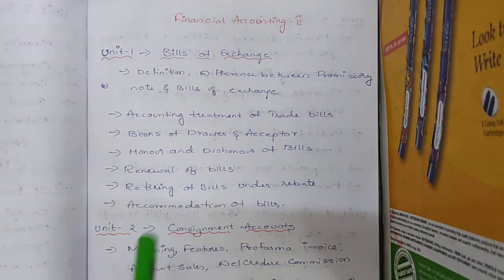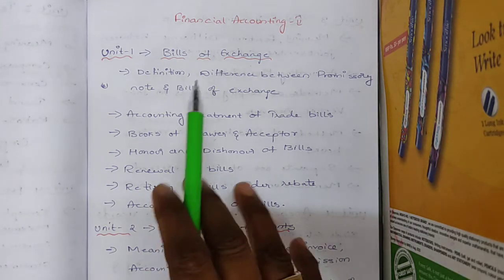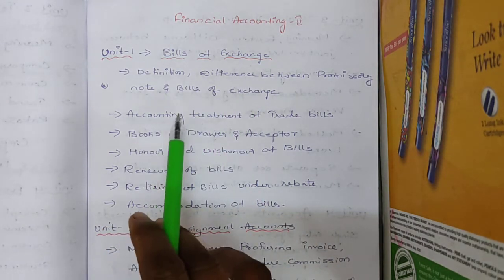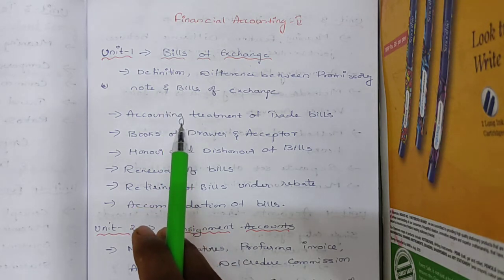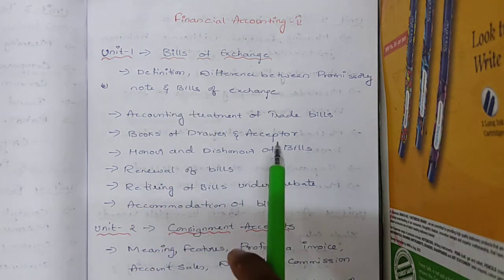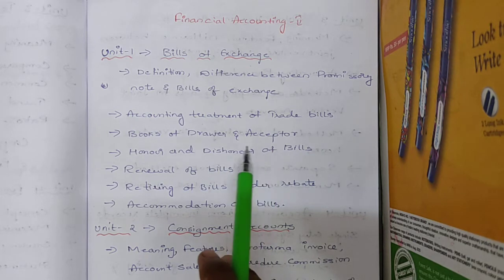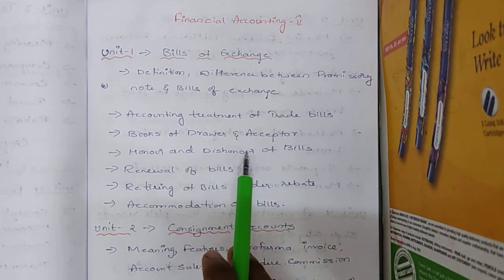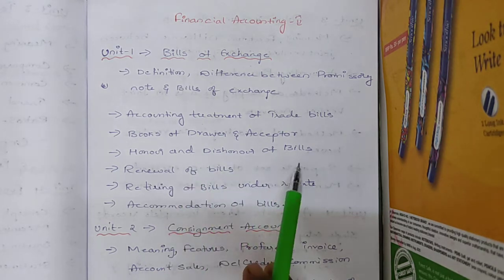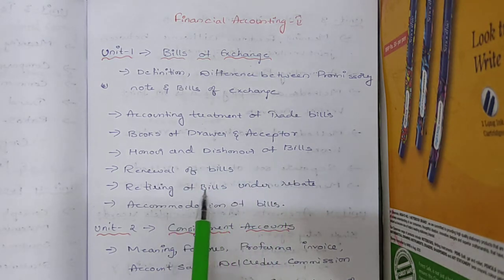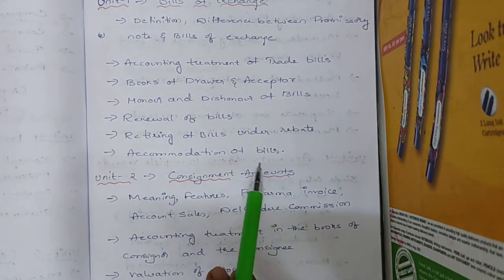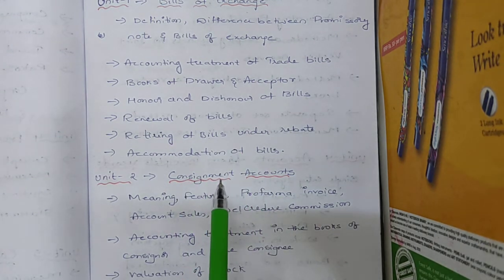First, Unit 1 is Bills of Exchange. Under Bills of Exchange, the topics are: definition of bills of exchange, difference between promissory note and bills of exchange, accounting treatment of trade bills, books of drawer and acceptor, honor and dishonor of bills, renewal of bills, retiring of bills under rebate, and accommodation of bills.